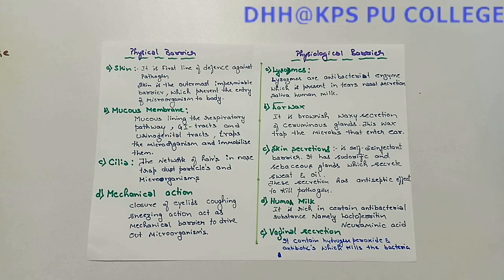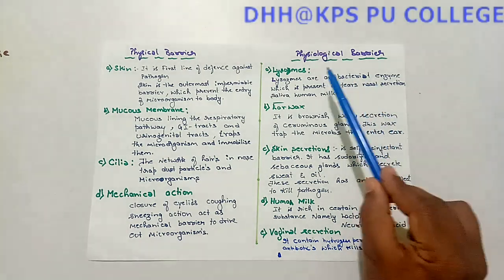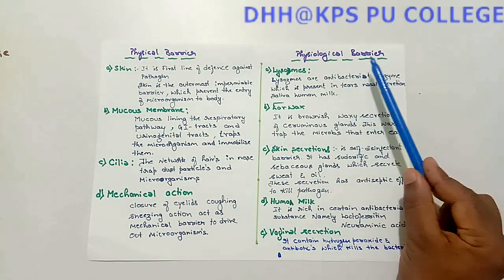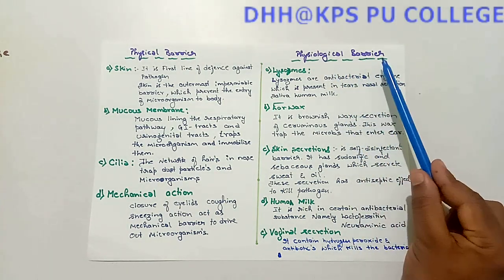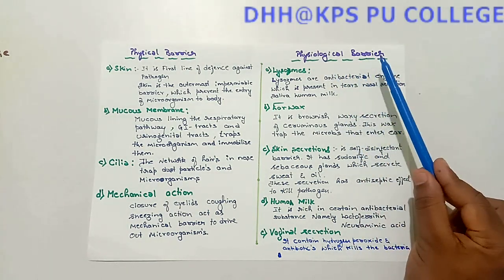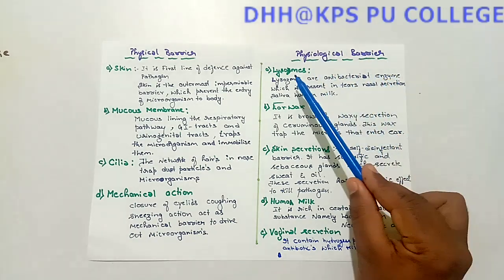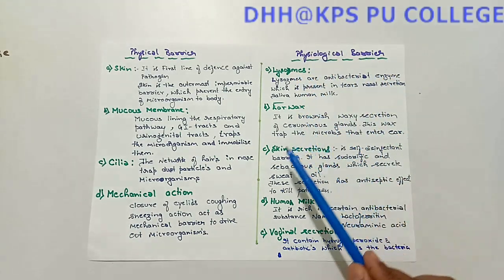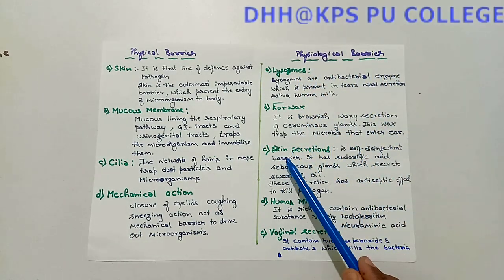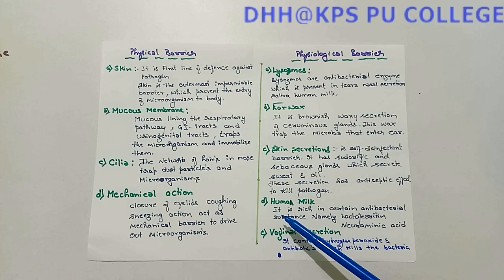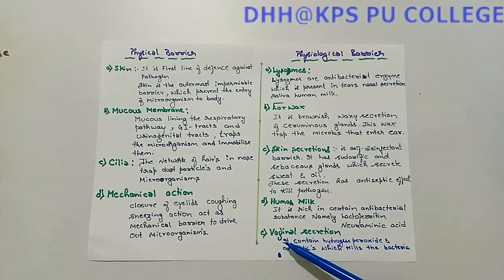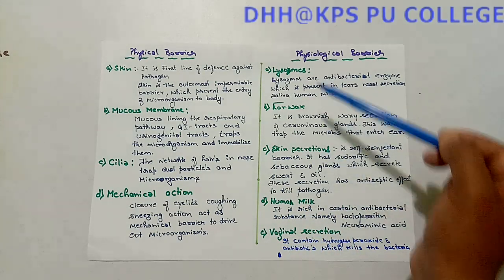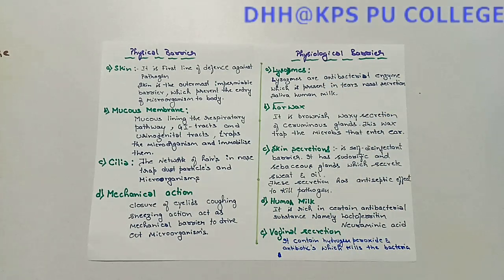The second type is the physiological barrier. Physiological barriers include lysozymes, earwax, skin secretions, human milk, and vaginal secretions.